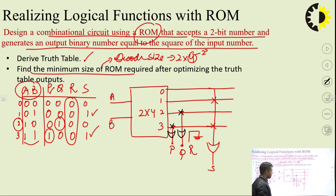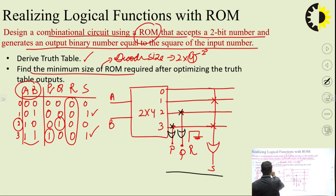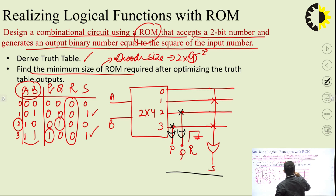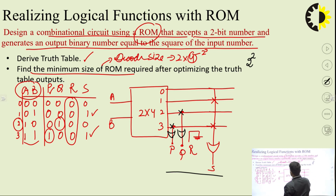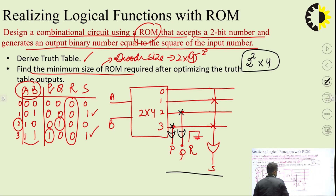This completes the circuit design using ROM. The complete ROM has 4 outputs and 2 inputs. The minimum ROM size required is 2^2 × 4, meaning 4 addresses with 4 data bits each. This is written as a 4×4 ROM (2 raised to power 2 locations, with 4 output lines).